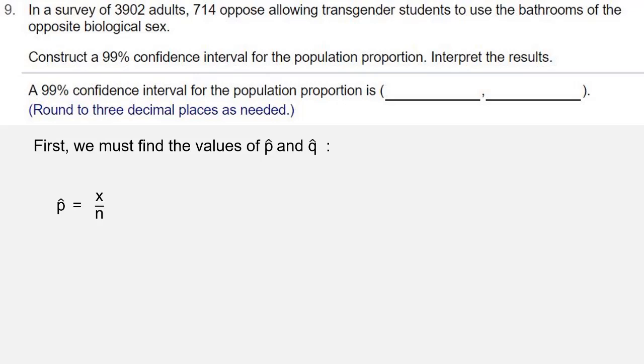So in this case, this is 714 over 3902, which when we divide, we get 0.1829830856, rounded to 3 decimal places, is 0.183.